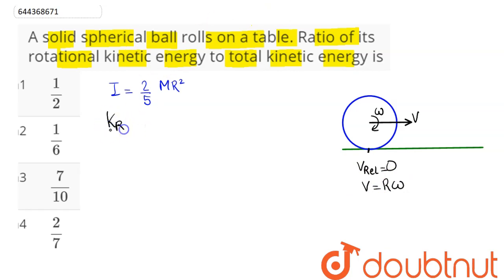As we know, rotational kinetic energy is 1/2 Iω², and total kinetic energy is the sum of translational kinetic energy and rotational kinetic energy, so 1/2 mv² plus 1/2 Iω². Half cancels out from the numerator and denominator, so Iω² becomes...